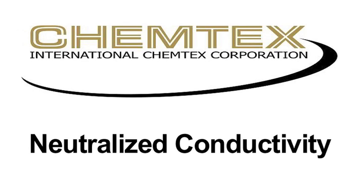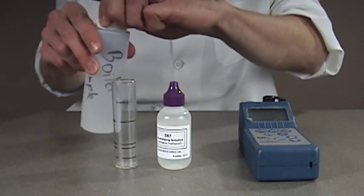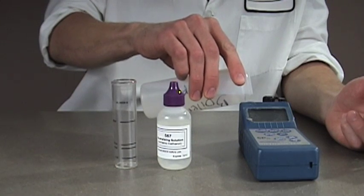To eliminate the interference of hydroxyl ions while measuring conductivity, we must first neutralize the sample. Hydroxyl ions are added to boilers in the form of sodium hydroxide and potassium hydroxide.